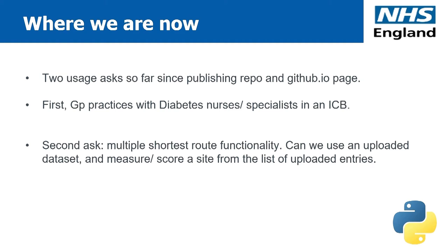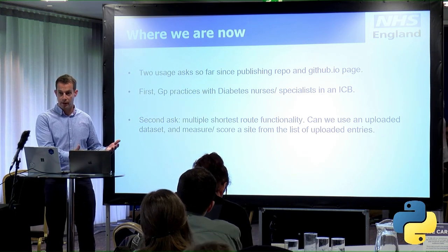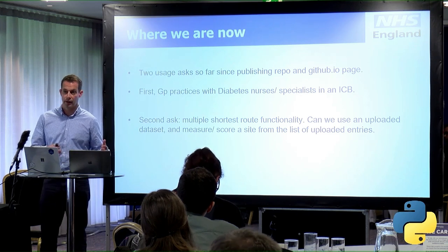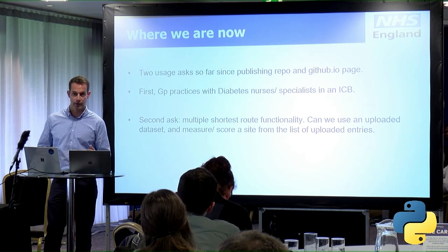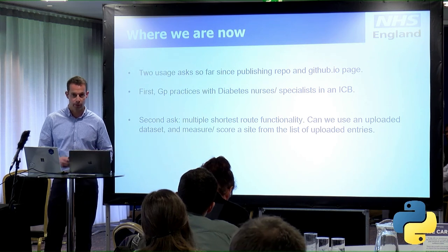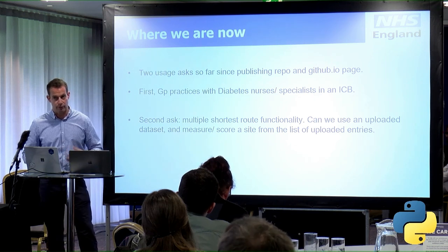That brings me to where we are now. Since publishing the repo — which is up on our NHSX GitHub page with a GitHub.io walkthrough — we've had two asks. I currently manage a PhD student with an SNF Trust in northeast Essex and Suffolk who is looking into diabetes and inequalities data. As part of his investigation he wanted to find GP practices with diabetes specialisms or diabetes nurses, which isn't easily available information, so we reproduced that code and ran it to investigate whether GP practices with diabetes nurses perform better at diagnosing or referring people to a diabetes centre. The second ask from the SNF Trust was: can we calculate multiple shortest-route functionality for patients to address missed appointments?